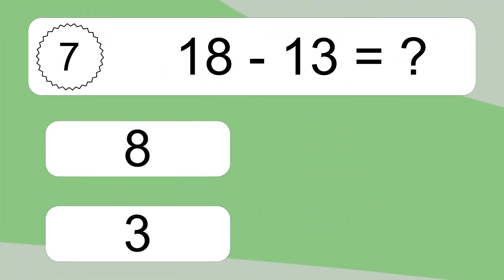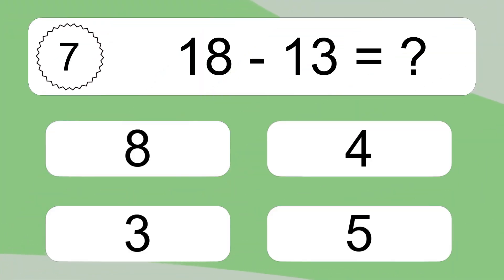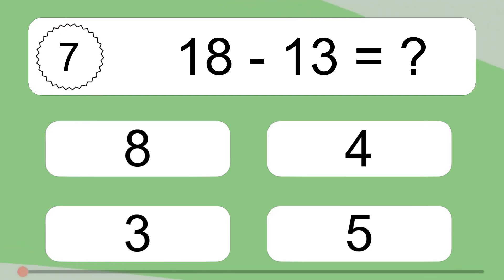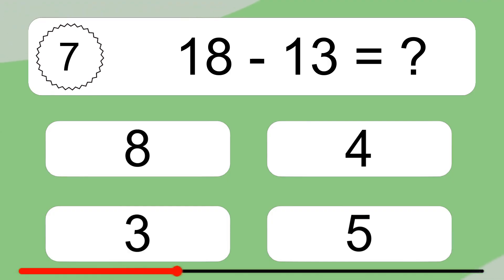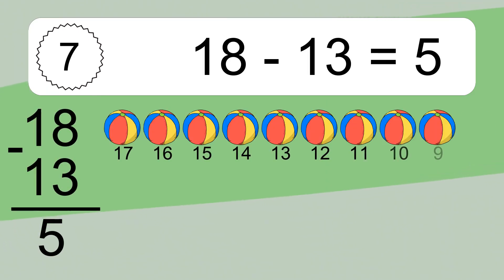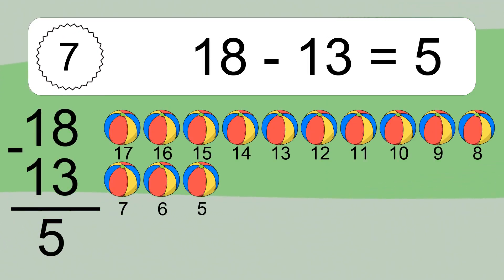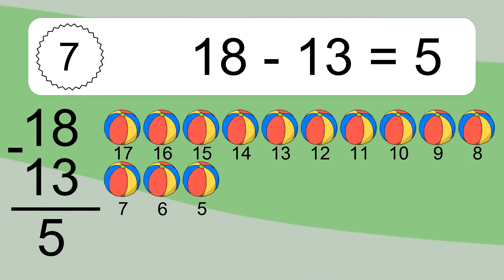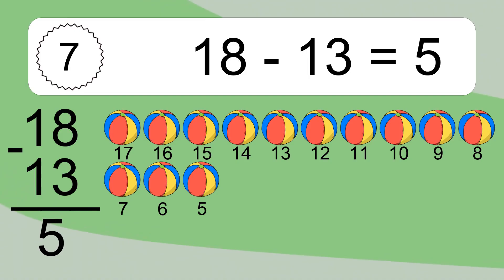18 minus 13 equals what? 18 minus 13 equals 5. Let's count it. 17, 16, 15, 14, 13, 12, 11, 10, 9, 8, 7, 6, 5.